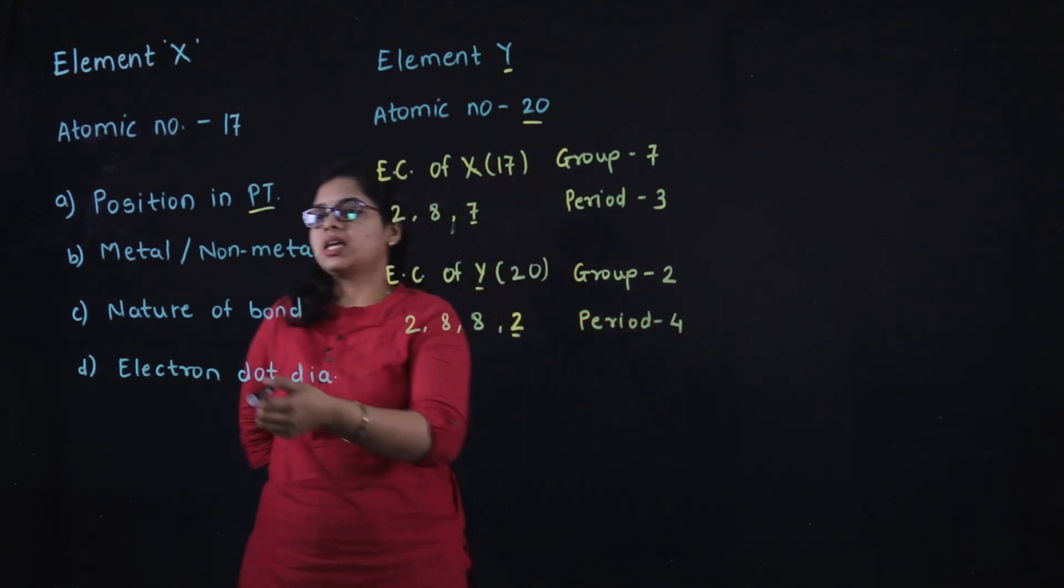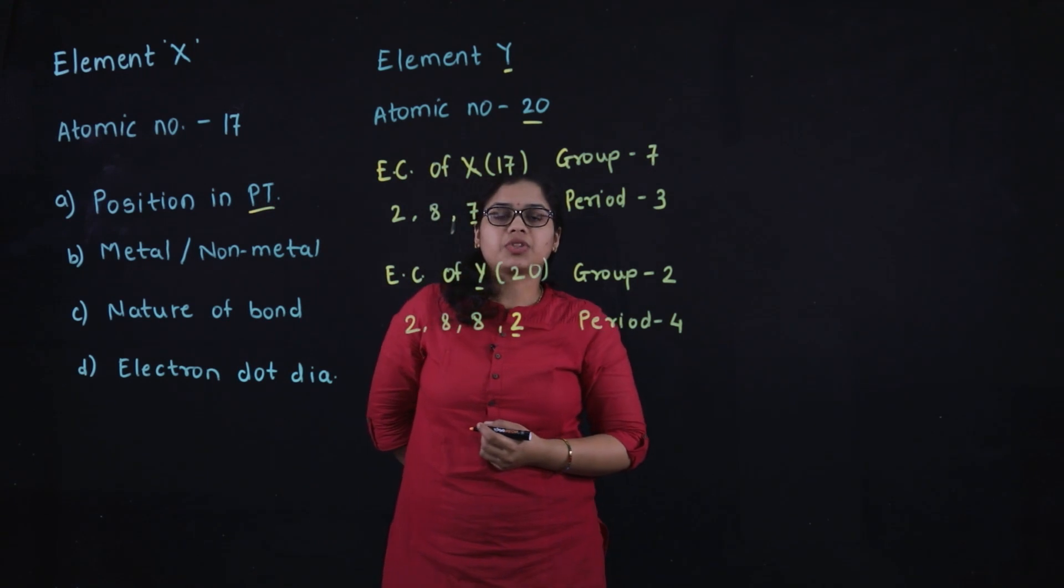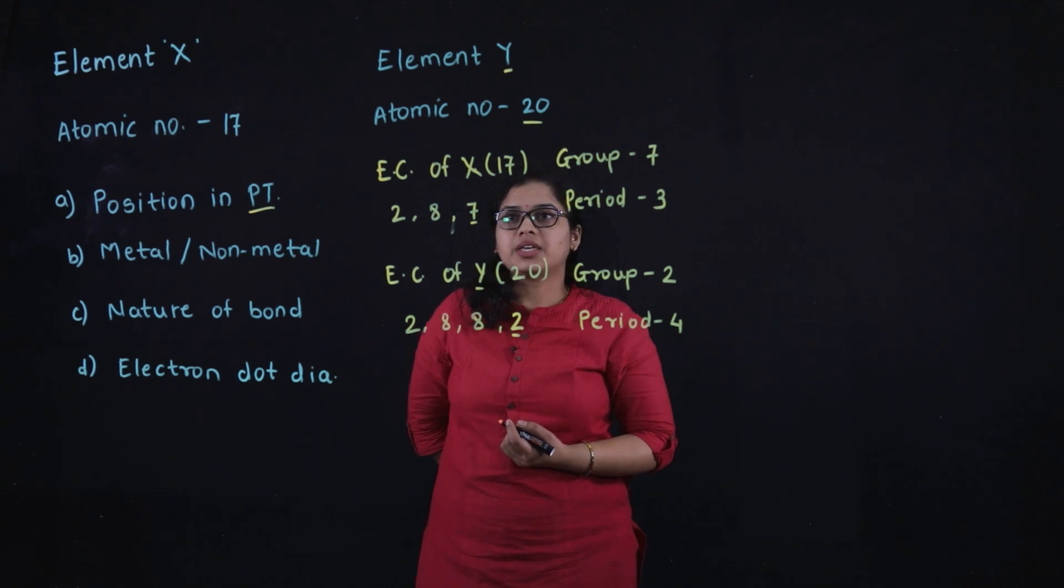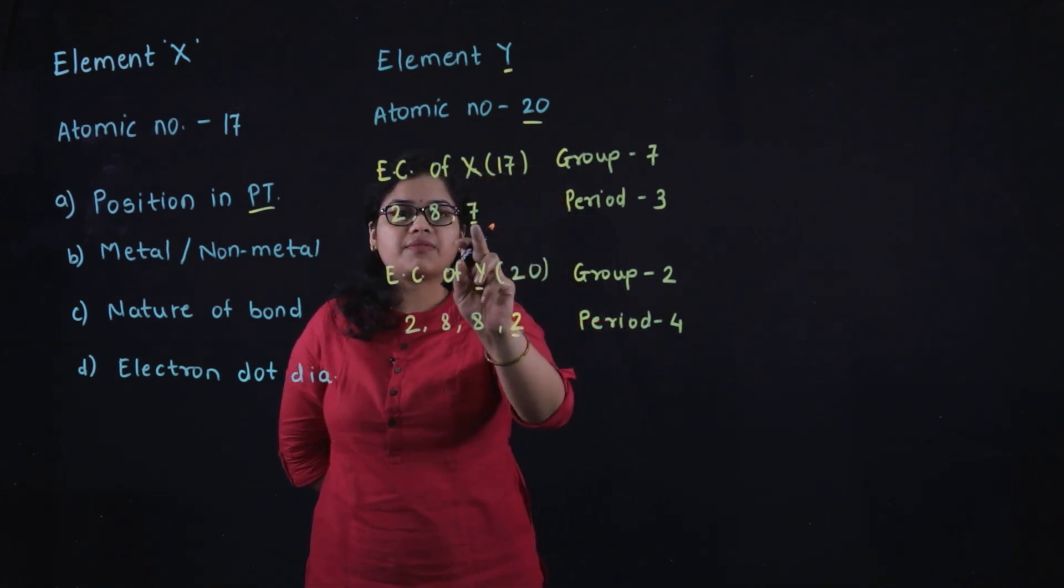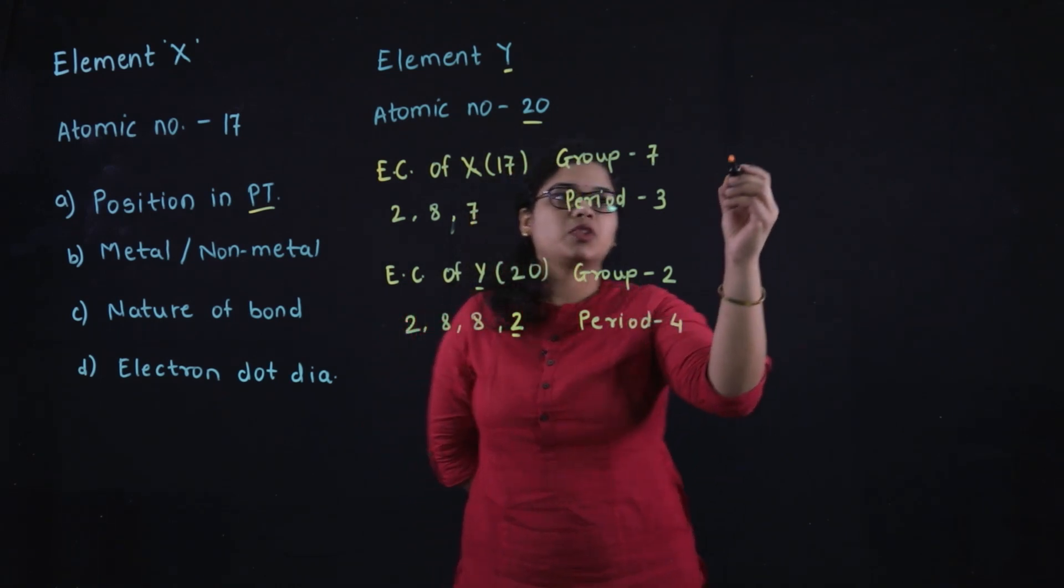Next question: is element X metal or non-metal? We know that elements with valence electrons 1, 2, or 3 are metals. Here element X has valence 7, so element X is non-metal.